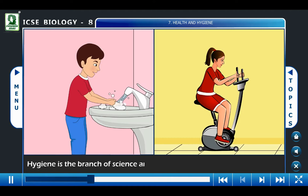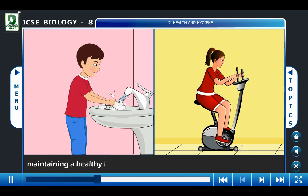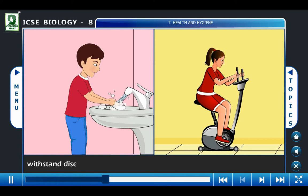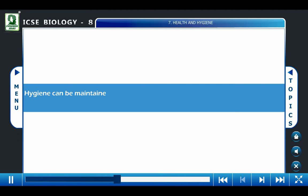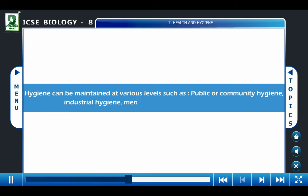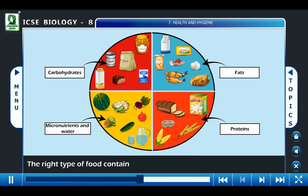Hygiene is the branch of science and medicine that has to do with maintaining a healthy body. If a body is fit and healthy, it is able to withstand disease or to recover quickly from an illness or accident. Hygiene can be maintained at various levels, such as public or community hygiene, industrial hygiene, mental hygiene, and personal hygiene.